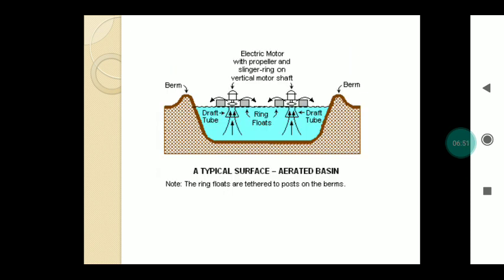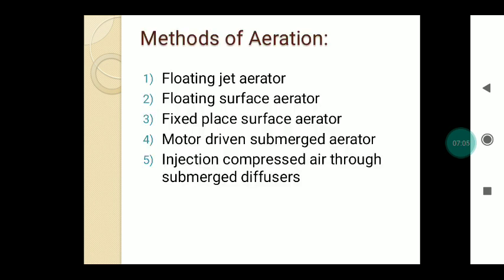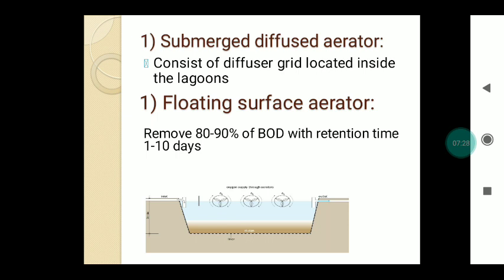The diagram shows the aerated lagoons where diffuse aerators are fixed on a permanent foundation, surrounded by the earthen basin. Methods of aeration include: floating jet aerator, floating surface aerator, fixed-place surface aerator, motor-driven submerged aerator, and pipe injection of compressed air through submerged diffusers. The submerged diffused aerator consists of a diffuse grid located inside the lagoons. The floating surface aerator achieves 80 to 90 percent BOD removal with a retention time of 1 to 10 days, floating on the surface of the sewage to introduce oxygen.